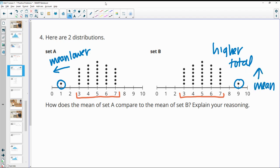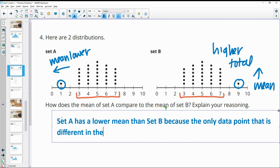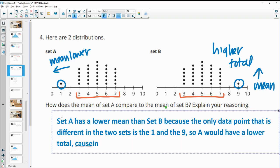When we compare set A to set B, you can say it a couple different ways. Set A has a lower mean than set B because the only data point that is different in the two sets is the one and the nine. So A would have a lower total causing a lower mean, or something similar to that.